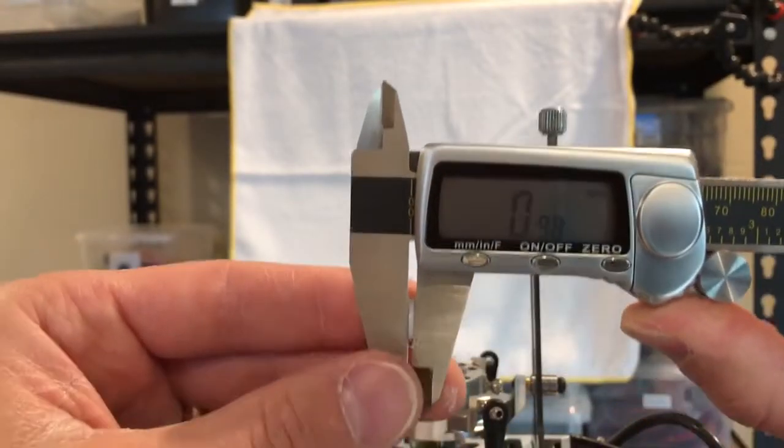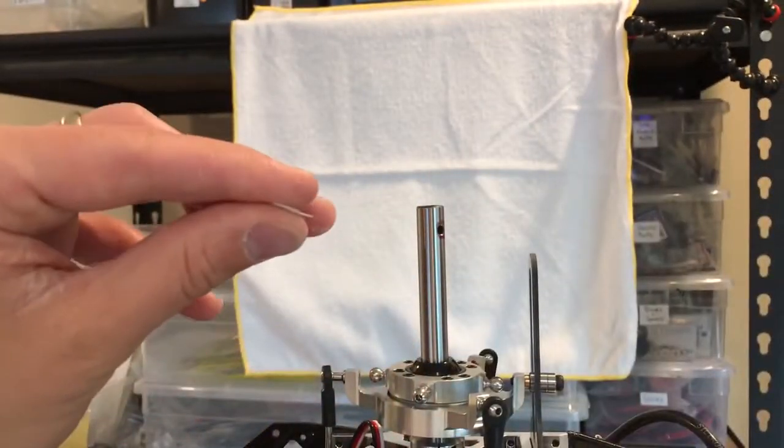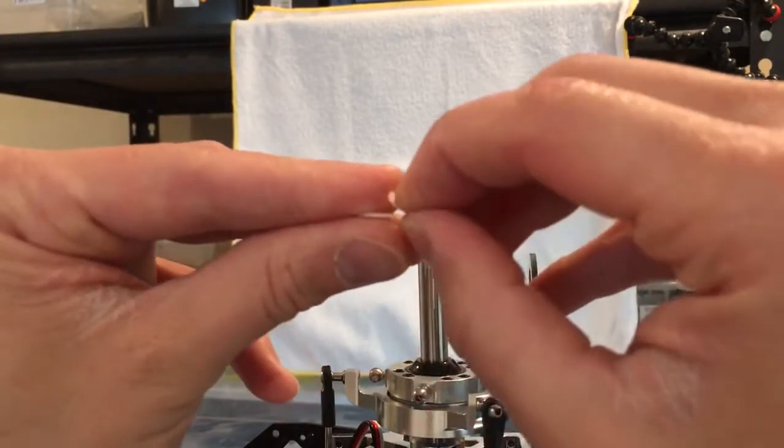These are the two shims. So what I do with the shims: I put them on top of the main shaft.